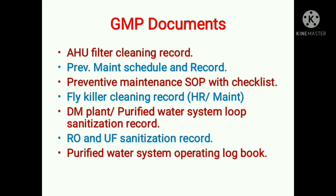So let's start. These are the list of documents. First is HEPA filter cleaning record, then preventive maintenance schedule and record — where schedule means the calendar and record means the filled documents. Then preventive maintenance SOP with checklist — that is, all the SOPs of all the equipment or machines which are used in utility or production department, along with their checklists.